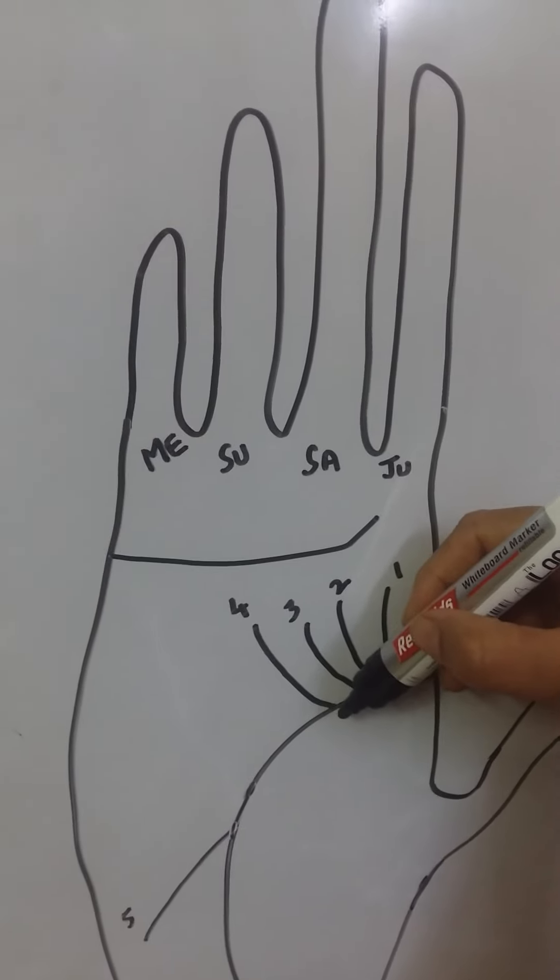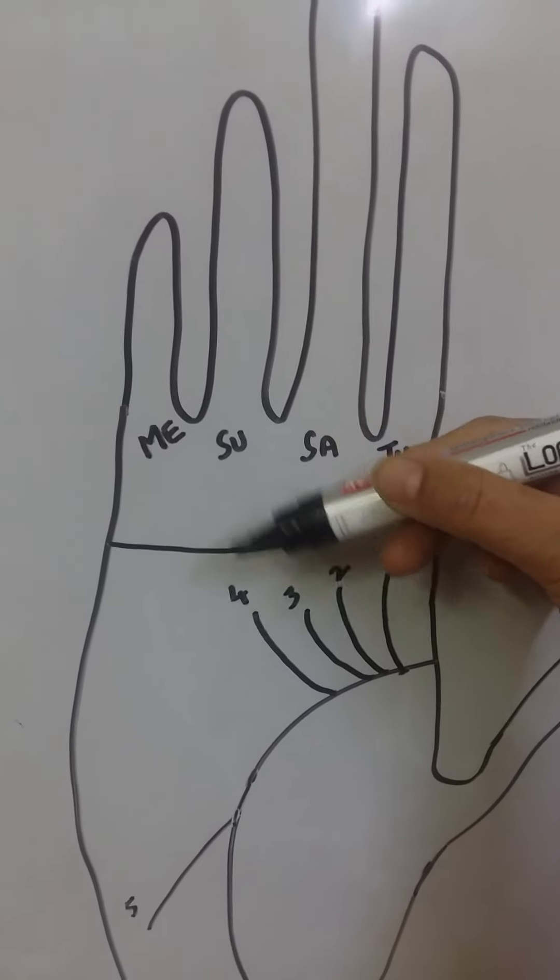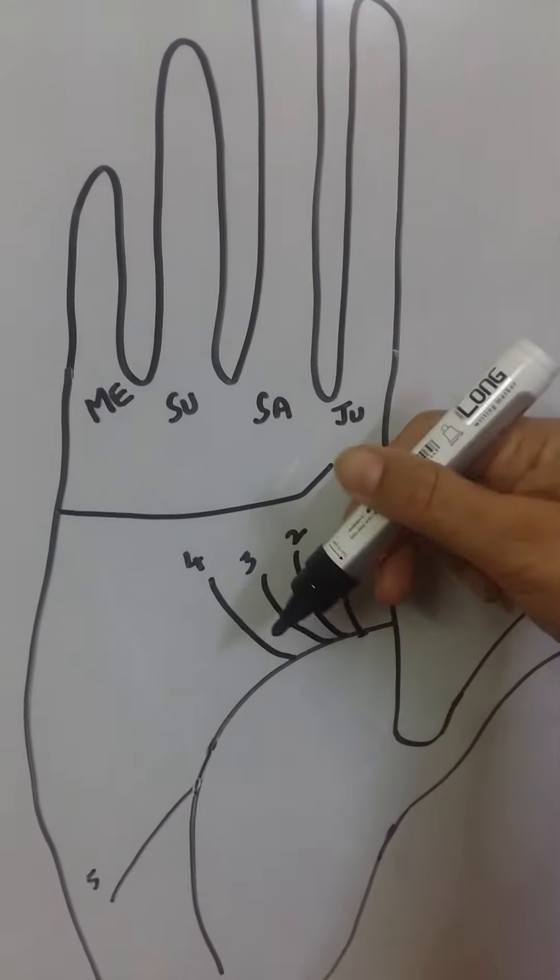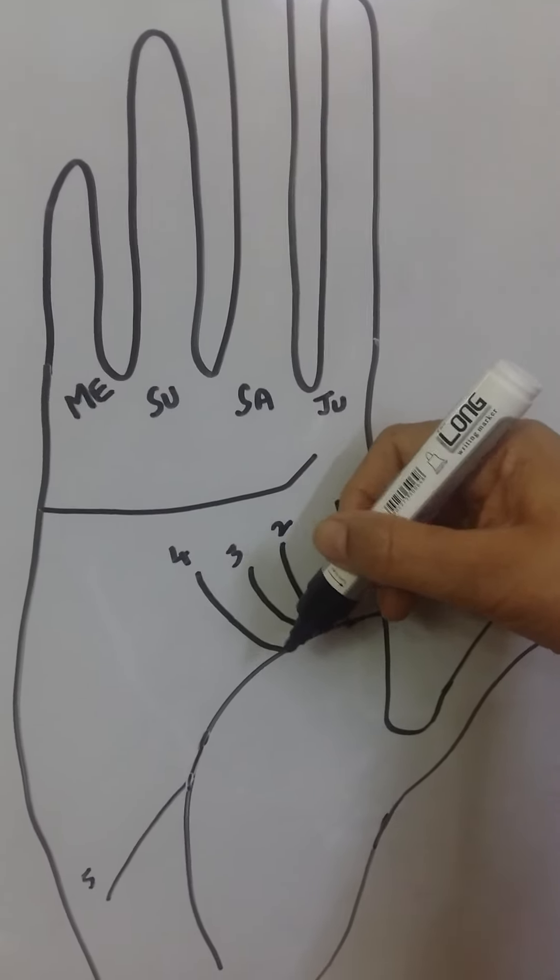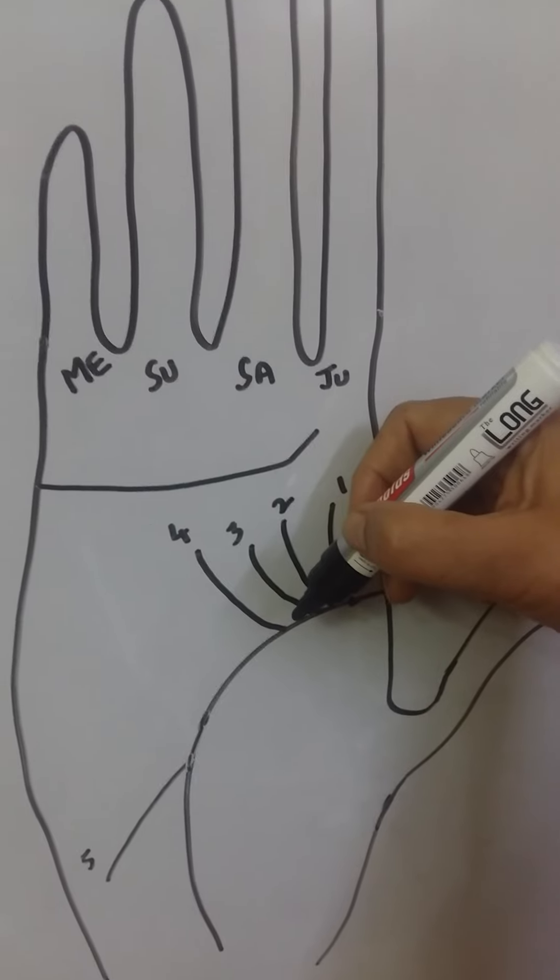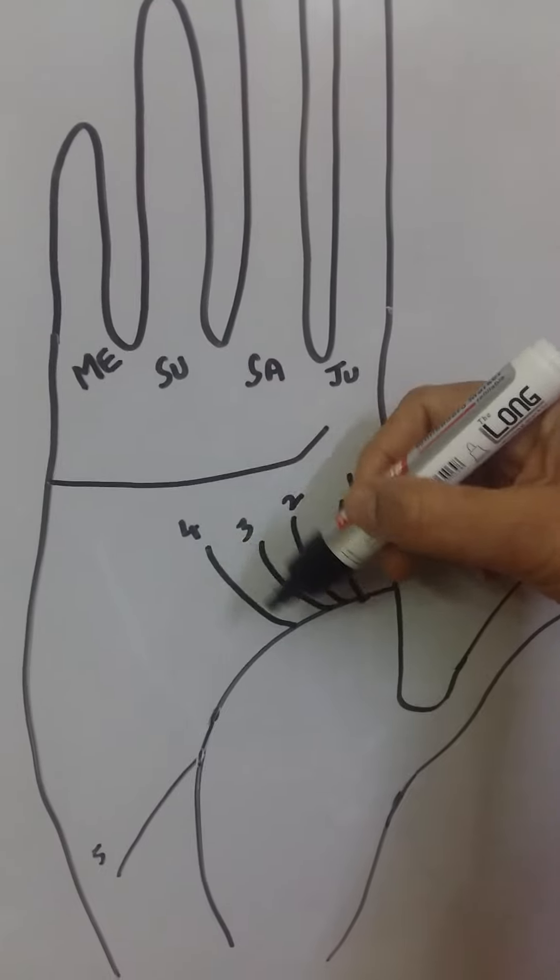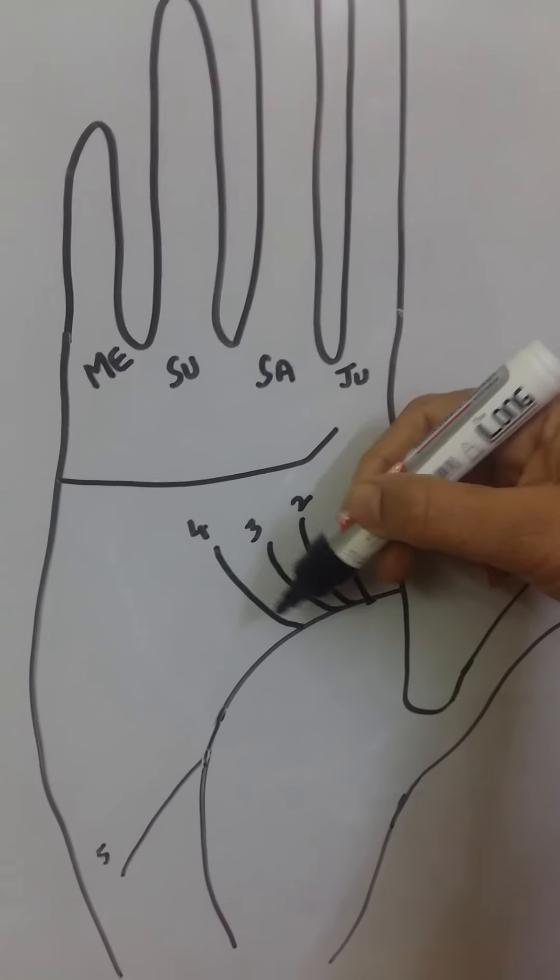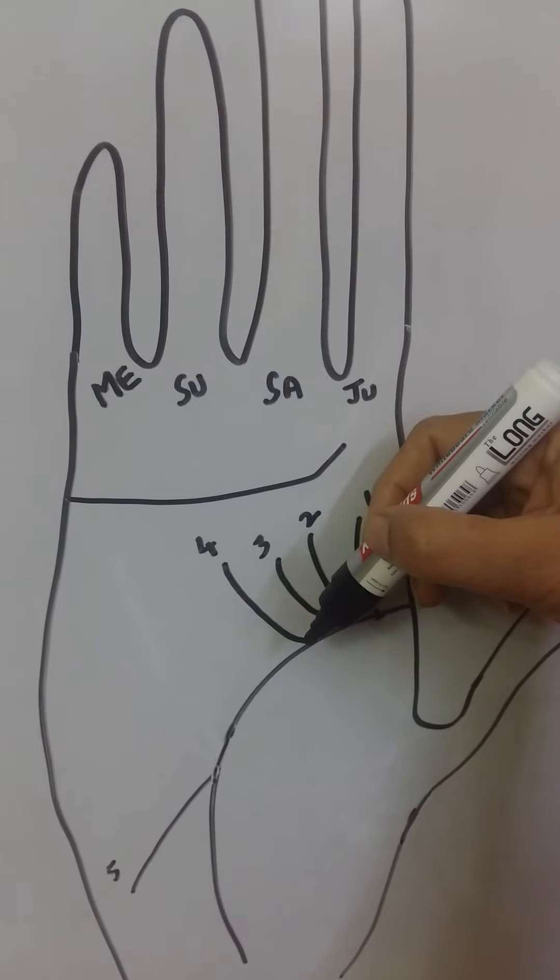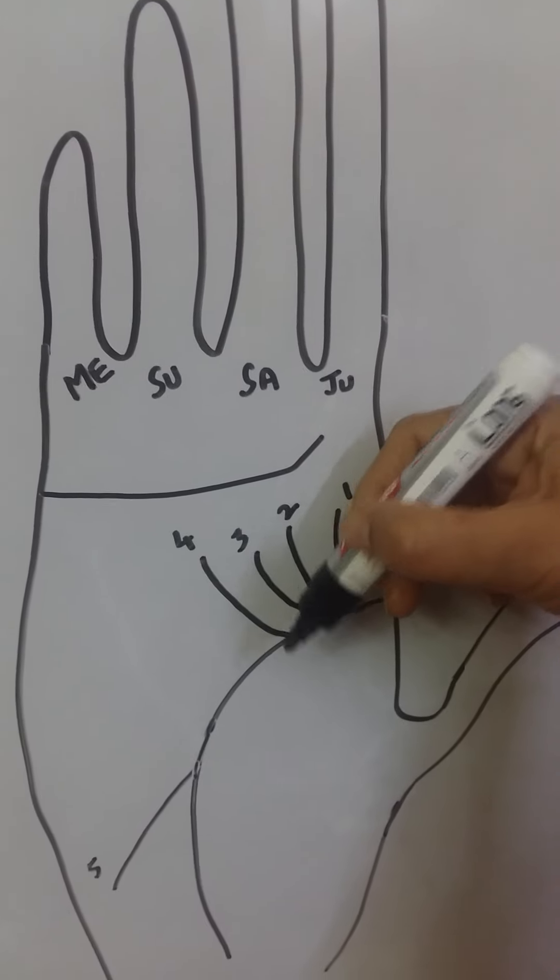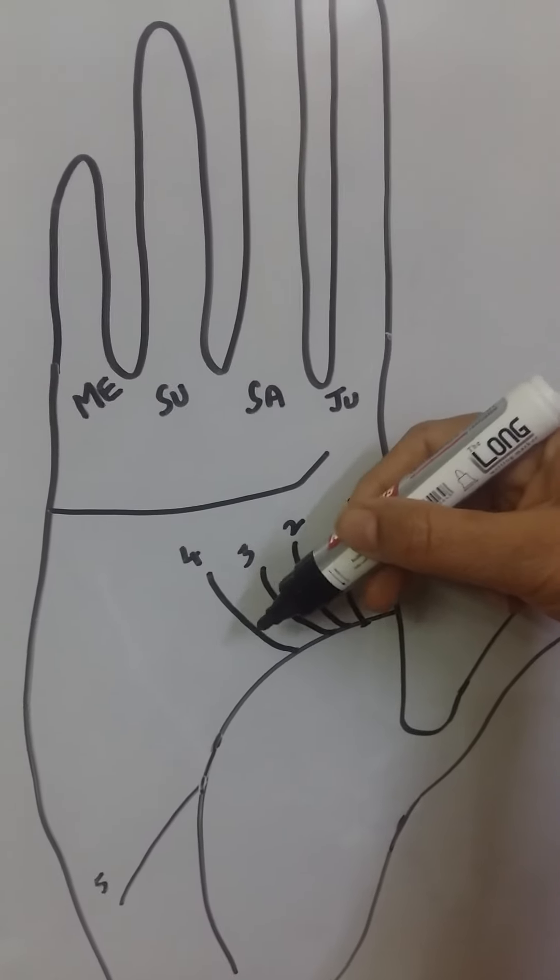Next, if a small branch going towards your Mercury mound, such people have very good communication skills. They do very well in business and communication-related work also, like teaching or in banking. And sometimes this line also gives travelling abroad. This line also gives travel. And such person lead a successful life, and they have good health also.